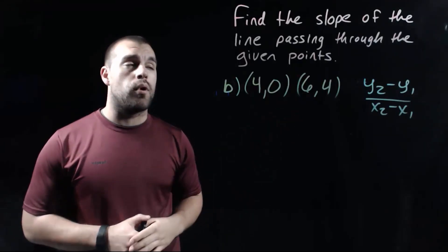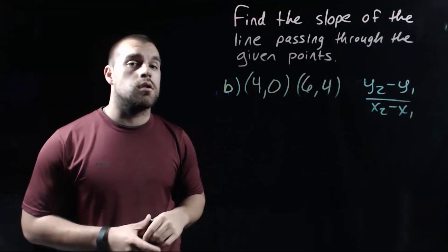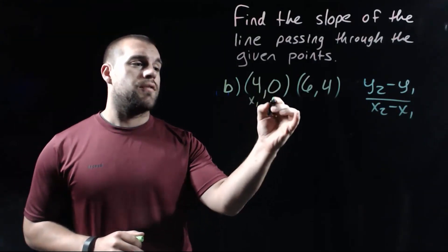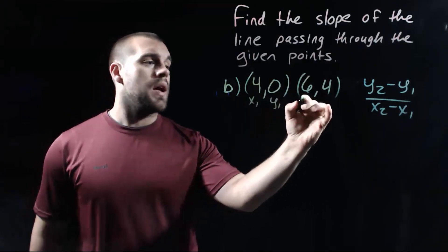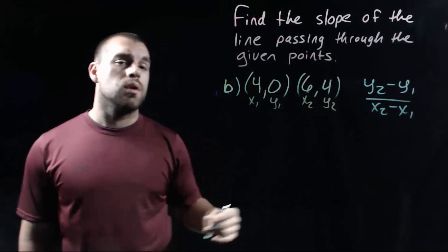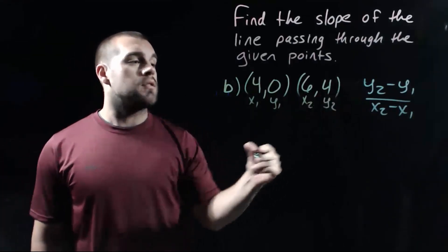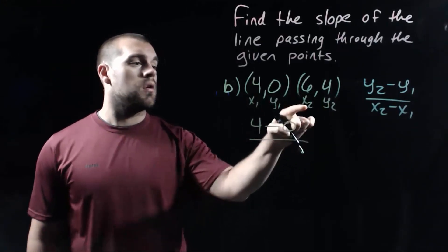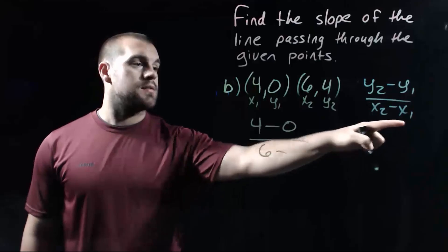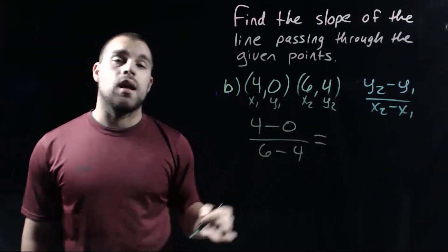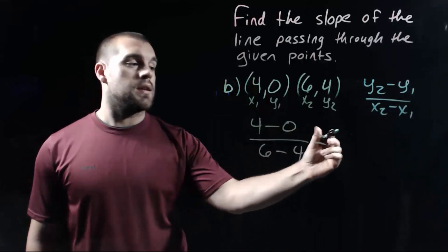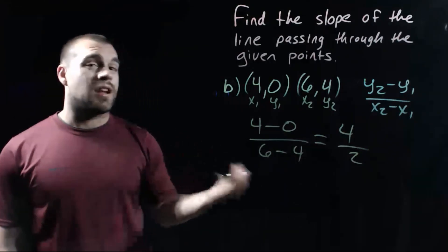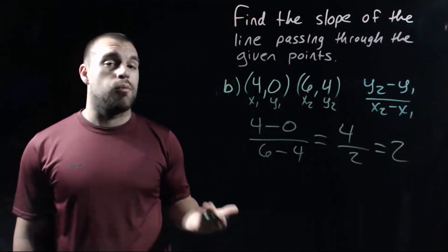In this example, we're given a couple of new points and we're still going to find the slope between them using our slope formula. Just like before, I'll label the ordered pairs: x1, y1 and x2, y2. Then we fill the numbers in: y2 is 4, minus y1 which is 0, over x2 which is 6, minus x1 which is 4. On top, 4 minus 0 is 4. On bottom, 6 minus 4 is 2. Then 4 divided by 2 gives this line a slope of 2.